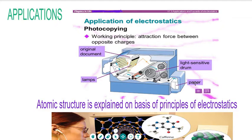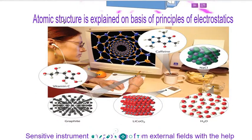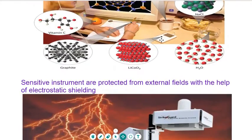Another application is in atomic structure. Atomic structure is explained on the basis of electrostatics. You can see the structure of caffeine, the structure of NaCl, the structure of H2O, the structure of graphite, and so on. All of these are explained with the help of electrostatics.